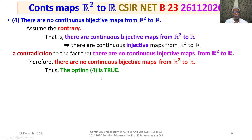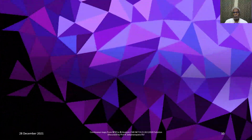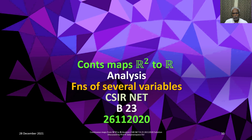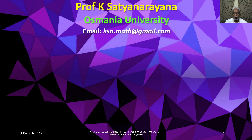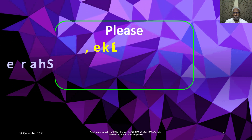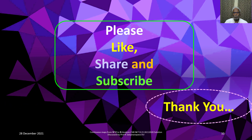We have seen that options 1, 2, and 3 are false, whereas option 4 is true. Our final answer is option 4 is true. That concludes the discussion of the solution of the problem from the section analysis on continuous maps from R square to R. I hope you have understood the solution. I wish you all the best. Thank you.